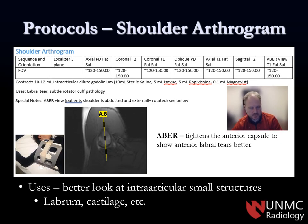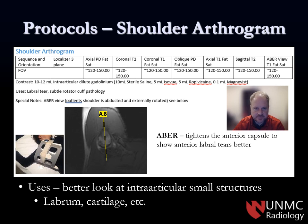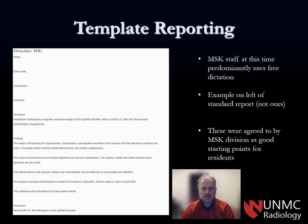Our shoulder arthrogram protocol is used when we inject contrast into the joint to look at certain structures better, especially cartilage and labrum. With gadolinium in the joint, we use T1 fat-saturated images, which show T1 hyperintense contrast in the small joint spaces to detect abnormality. The planes are fairly similar to the non-contrast shoulder MRI. We also always include the ABER view — abduction and external rotation — which tightens the anterior capsule to show anterior labral tears better.